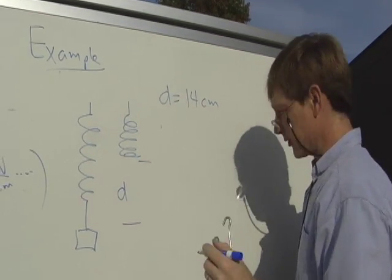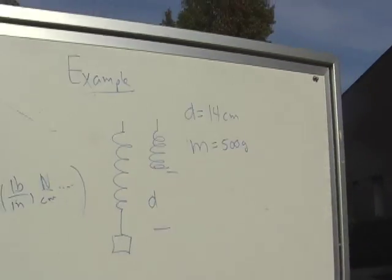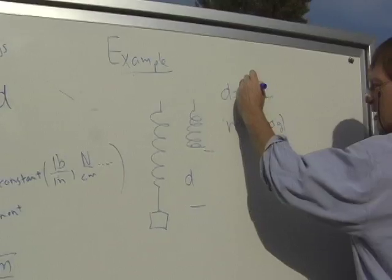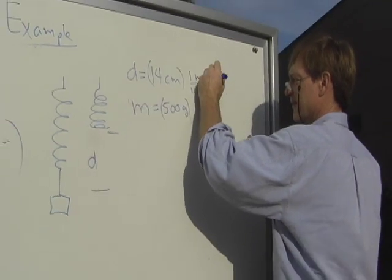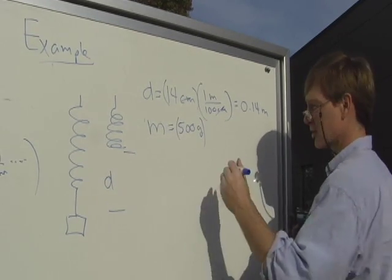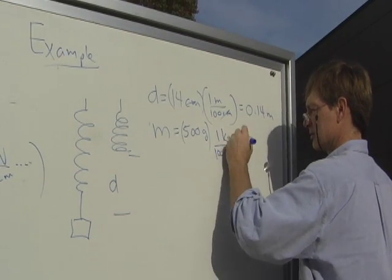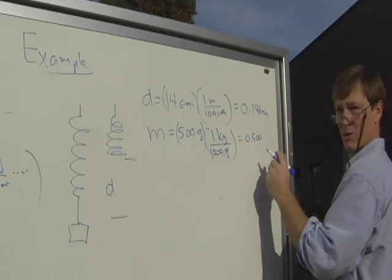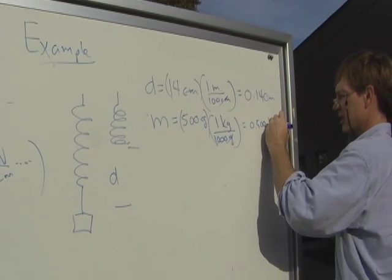The force is, well, the mass is 500 grams. I'll get this in meters. 14 centimeters, there's one meter for 100 centimeters, that's 0.14 meters. 500 grams, we need that in kilograms. There's 1 kilogram for every 1,000 grams. That's 0.500 kilograms.